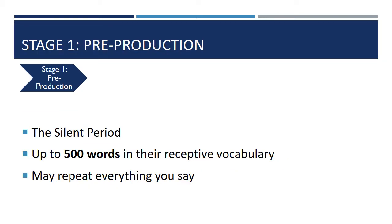The first stage of language acquisition is called pre-production, or the silent period. English language learners have up to 500 words in their receptive vocabulary — meaning they're able to understand up to 500 words, but they're not speaking yet. It's helpful to liken this stage to that of a child who is not yet speaking but understands a lot of what is being spoken to him or her, until they make a leap towards production.